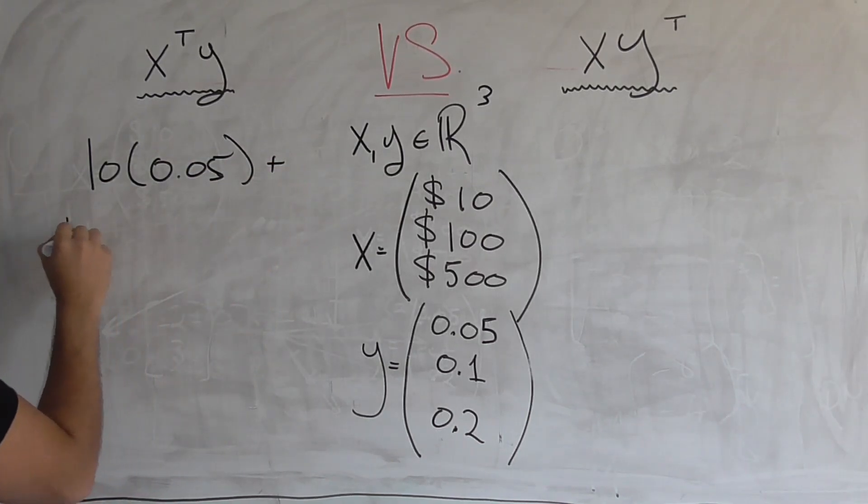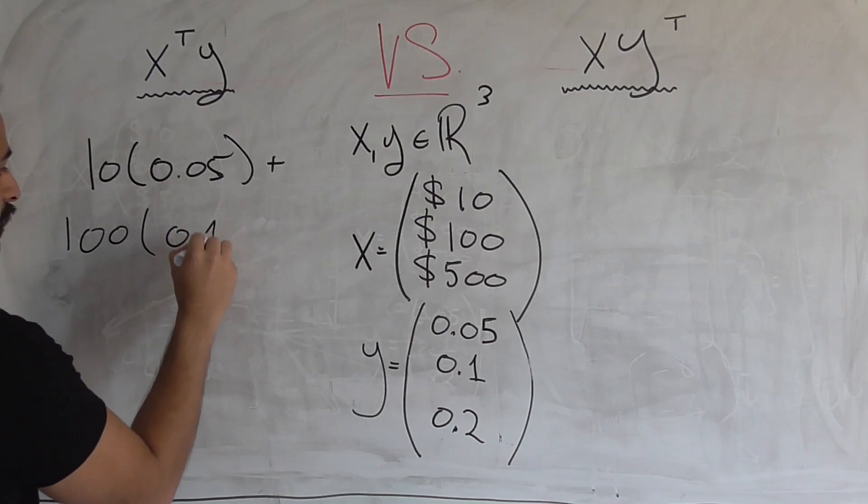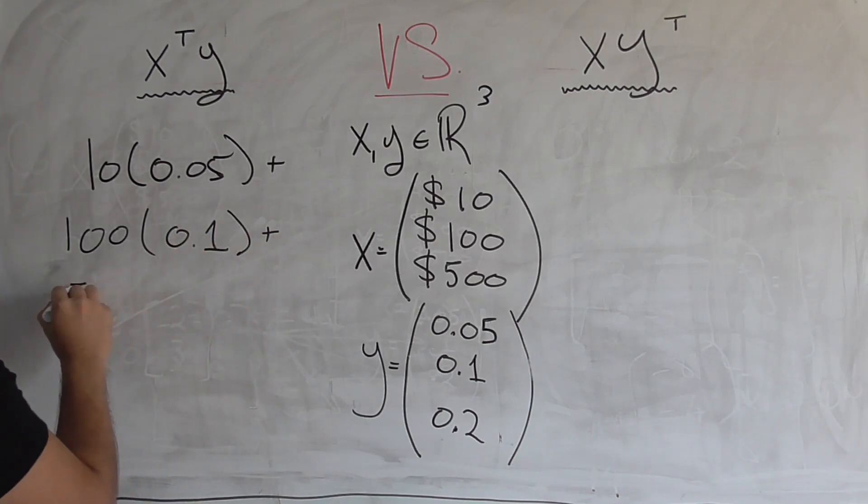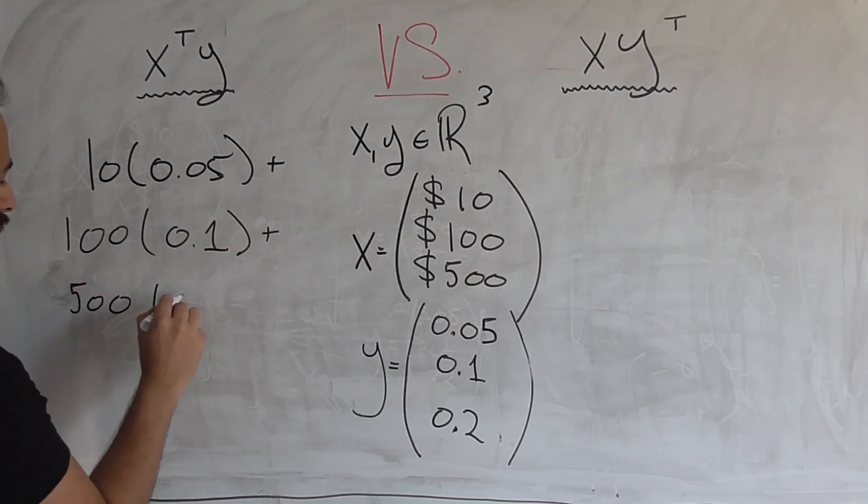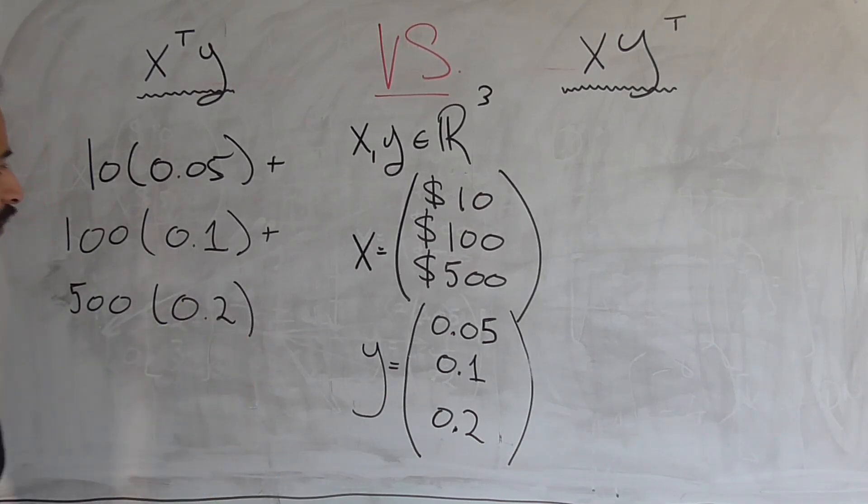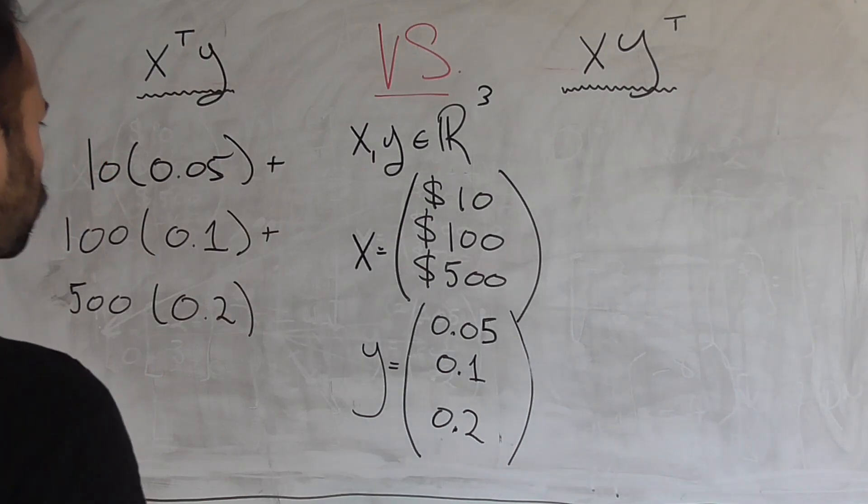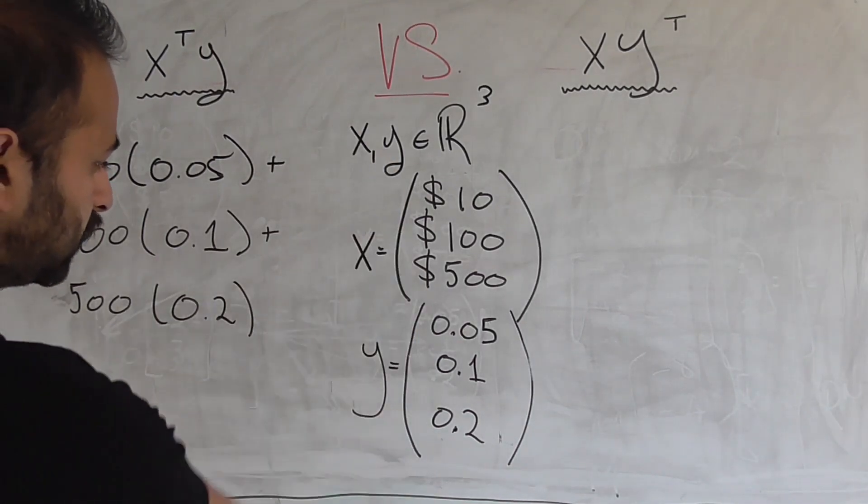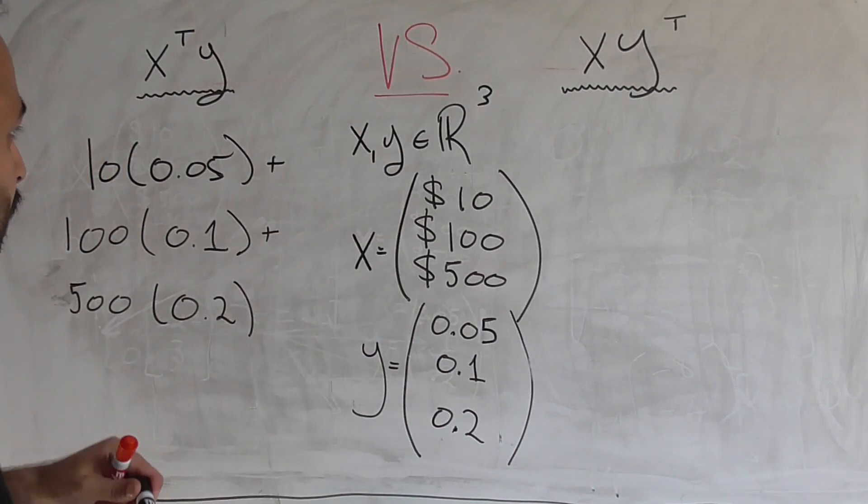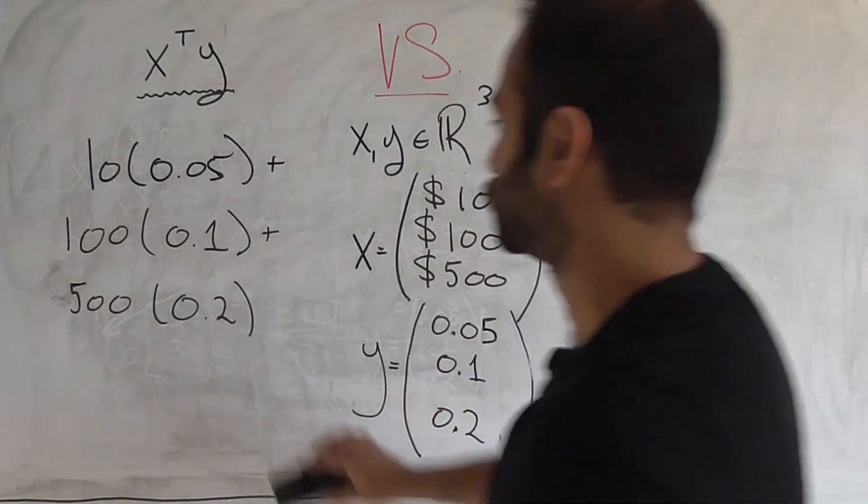Then I spent $100 on transportation, getting taxed at 10%. And finally, I spent $500 on lodging, and I'm getting taxed at 20%. So if we work that out, which we're not going to, that would be the answer to how much total taxes is my company spending for this trip. Now let's see why doing x transpose y gives us the exact same operation.